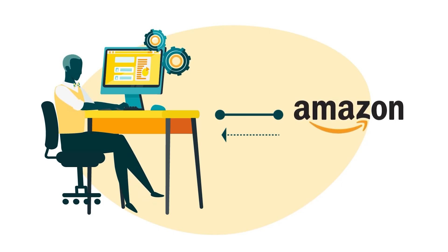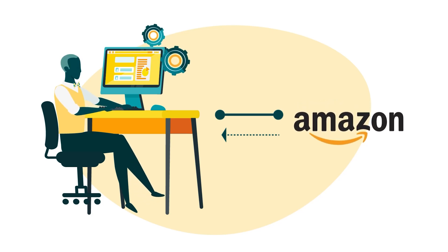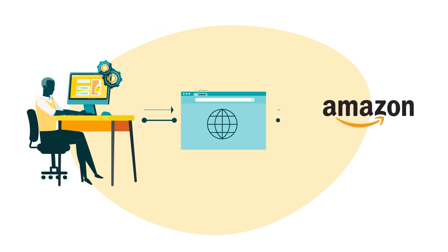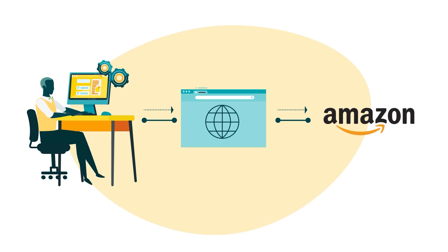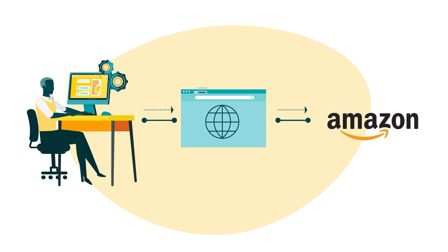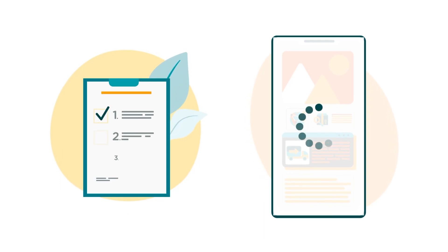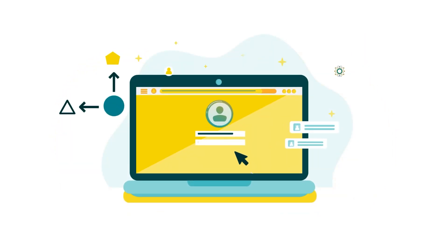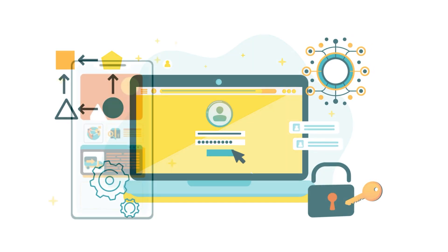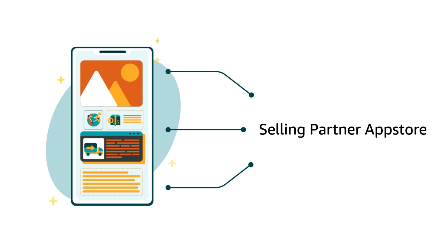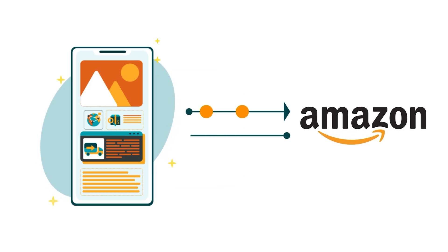To set up an OAuth Authorization, you'll follow two basic steps. One: configure your website to accept and process the parameters that Amazon passes to it. Two: redirect the Selling Partner's browser and pass parameters to Amazon. Make sure you complete these steps with your application still in draft status so you can test your authorization workflow before listing your application in the Selling Partner App Store. Testing ensures that your application can exchange parameters with Amazon and receive authorization information.